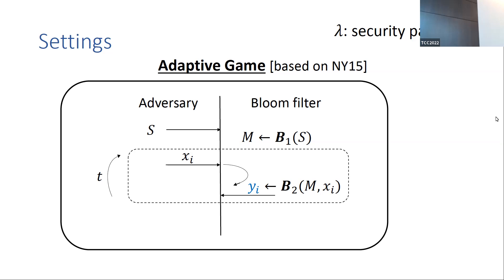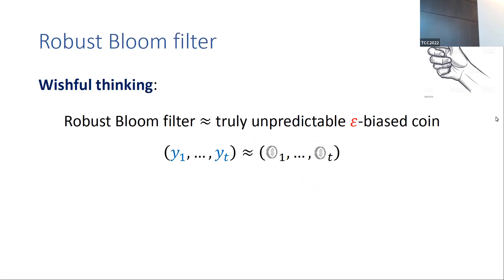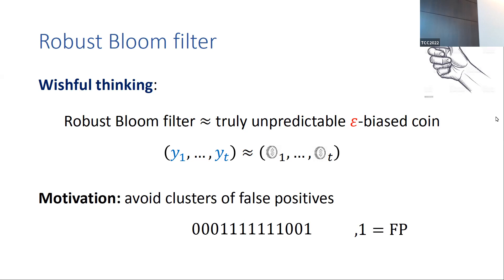To handle a computationally bounded adversary, we add a security parameter λ given to both the adversary and the bloom filter as input. In each test, the adversary aims to achieve a different goal to make the bloom filter fail. Our wishful thinking when trying to suggest definitions is that a robust bloom filter should be like a truly unpredictable biased coin — meaning by looking at the responses on adaptive queries, we want them to look like a sequence produced by a random biased coin with bias ε.